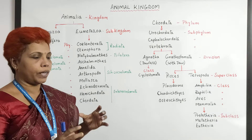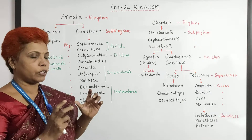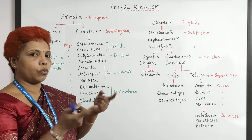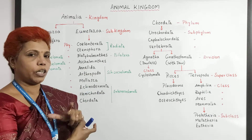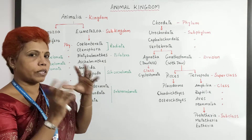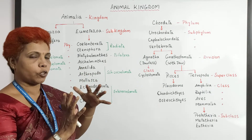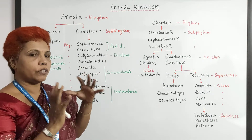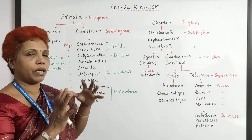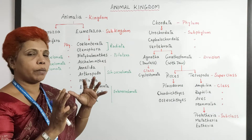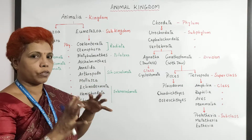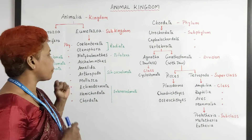That body cavity present between the inner tube and the outer tube — the coelom — is where all the visceral organs are placed. It is a kind of coelomic fluid that keeps the visceral organs safely placed in that region.